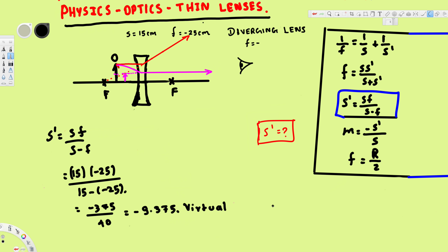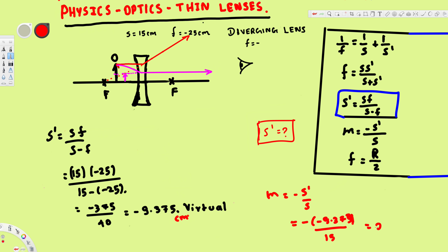To find whether the image is upright or inverted, we can confirm from the diagram that it's upright. To prove it mathematically, we use the magnification equation: m equals negative s-prime over s. Plugging in, that's negative negative 9.375 over 15, which gives us 0.625. Since the answer is positive, the image is definitely upright, and the image is 0.625 times the size of the original object — smaller than the object. That's how we solve this kind of problem.